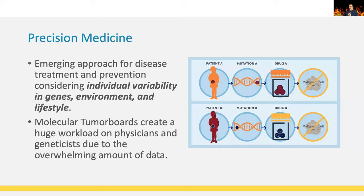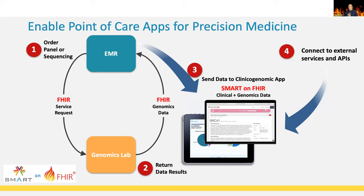This creates a huge workload because a lot of data comes in — these PDFs are usually four to five pages long, sometimes longer. The workload on physicians and geneticists due to the overwhelming amount of data is becoming a bigger and bigger problem. The hospitals we work with estimate a preparation time of 20 to 30 minutes per patient for the virtual tumor board. We want to reduce that time to give it back to practitioners to treat patients. We also want to enable point-of-care apps for precision medicine.